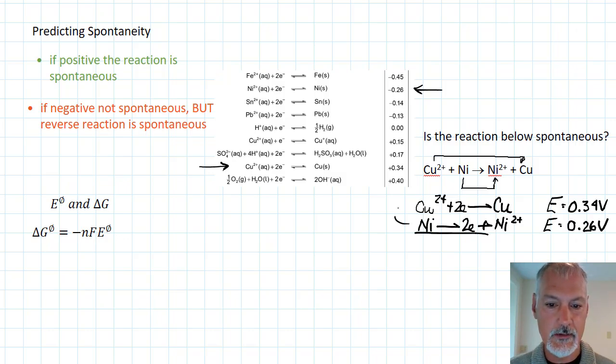Summing those together gives me this reaction. So I can sum together this, and I'm going to get the energy then of this particular cell would be 0.6 volts, a positive value, suggesting that this reaction would be spontaneous in the forward direction.